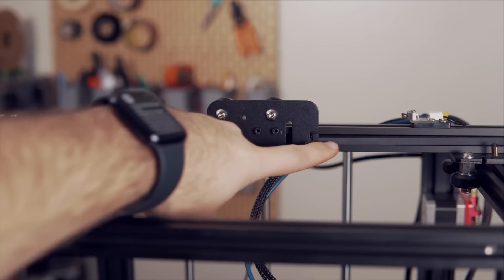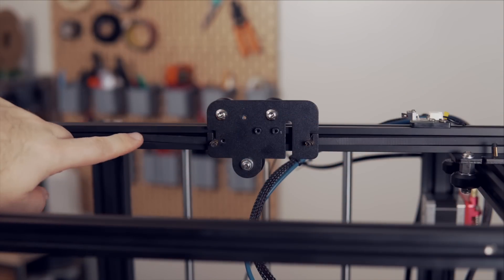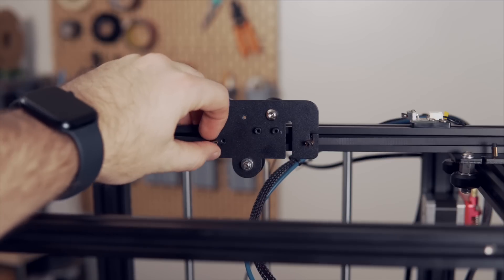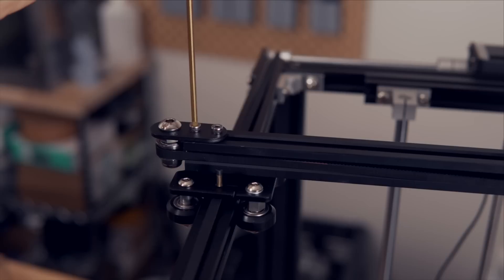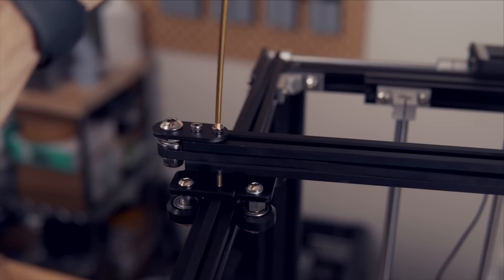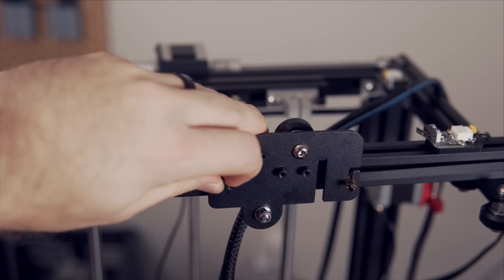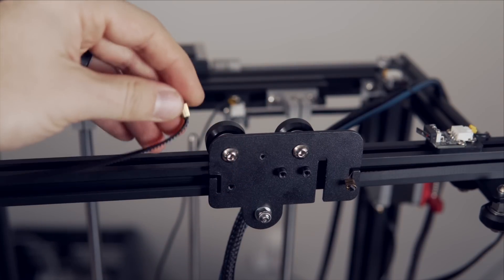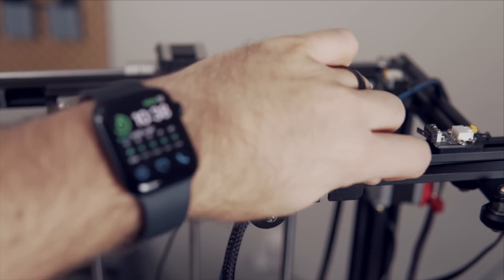The next step is to unhook the X axis belt from the left and right side of the X carriage plate. You will want to loosen the two screws holding the X belt tensioner in place that will just give you a lot more slack and make this a lot easier. And then you can simply grab both of the belt sides and pull it up and out away from that X carriage plate.